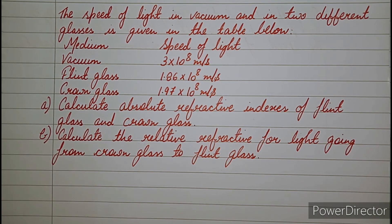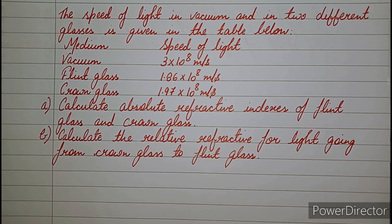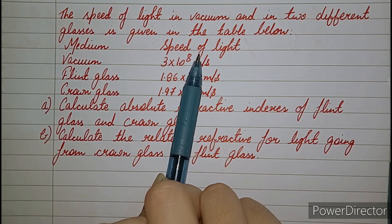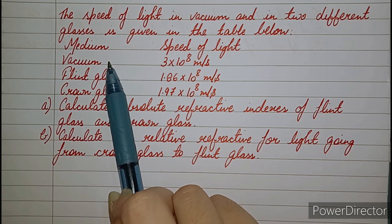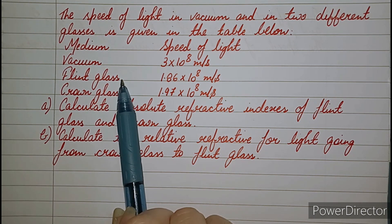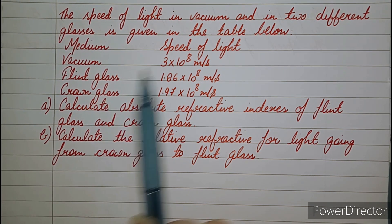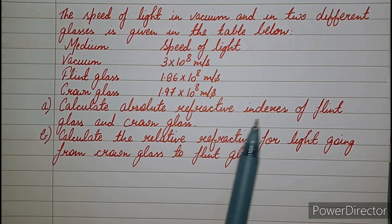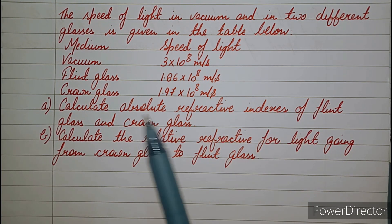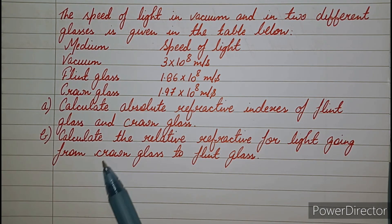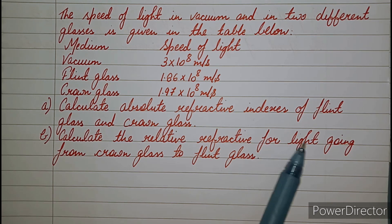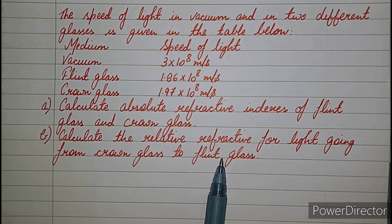The next question says that the speed of light in vacuum and in two different glasses is given in the table. The media are vacuum, flint glass, and crown glass with their respective speeds given. You need to calculate the absolute refractive indexes of flint glass and crown glass, and also calculate the relative refractive index for light going from crown glass to flint glass.